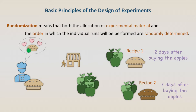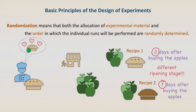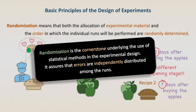However, he had made the pie with recipe 1 two days after buying the apples, while the pie with recipe 2, seven days after buying the apples. The apples were at a different ripening stage. Now, if there are differences between the pies, it can be because of the recipe, but also because of the ripening stage of the apples. The allocation of experimental material was not randomized. Randomization is the cornerstone underlying the use of statistical methods in experimental design. It assures that the errors are independently distributed among the runs.